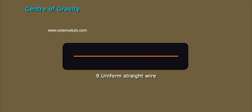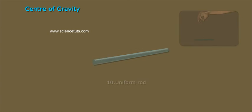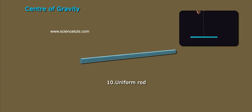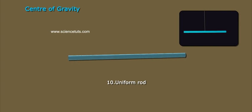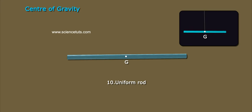9. Uniform Straight Wire: the midpoint. 10. Uniform Rod: the midpoint of the axis.